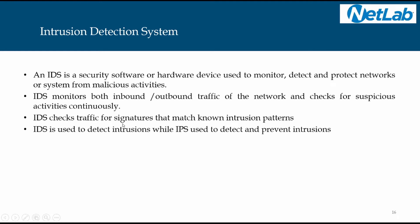IDS checks traffic for signatures. A signature is nothing but a pattern — every attack will have a pattern. Signatures match known intrusion patterns. IDS is used to detect intrusion, while IPS — intrusion prevention system — is used to detect and prevent intrusions. IDS cannot stop the attack; it can only detect and raise an alarm. Whereas the intrusion prevention system has the capability to even change the firewall rules to prevent the attack.